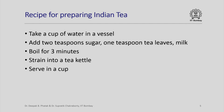Let us look at a recipe for preparing Indian tea. Consider these steps: take a cup of water in a vessel, add 2 teaspoons sugar, 1 teaspoon tea leaves and milk, boil the mixture for 3 minutes, strain into a tea kettle, serve in a cup. This is how what we call the Kadak Mithi Chai of India is made.